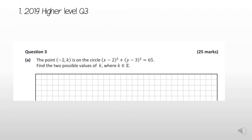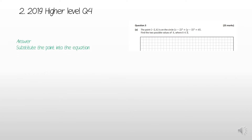This is the 2019 Higher Level Paper 2, Question 3. The question reads: the point (−2, k) is on the circle (x − 2)² + (y − 3)² = 65, and you have to find the two possible values of k, where k is real. To solve this, we substitute the point into the equation.